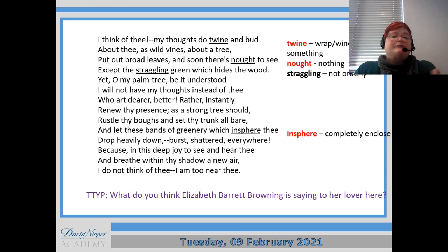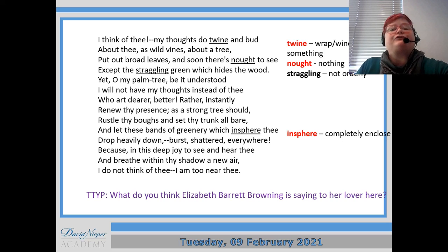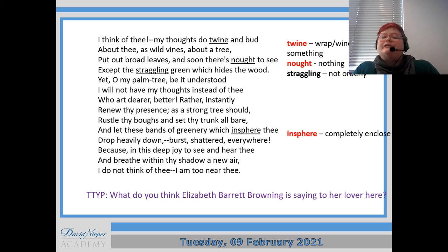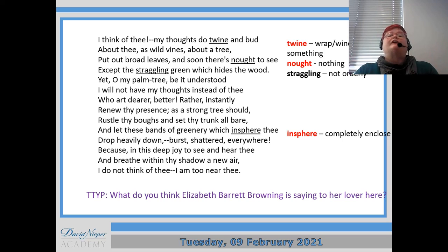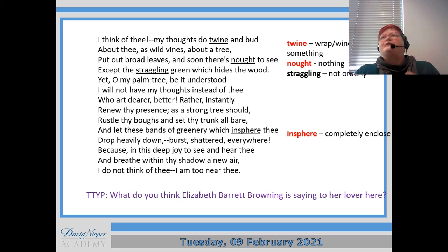'Let these bands of greenery which insphere thee drop heavily down' — she is the bands of greenery that insphere him. If she drops heavily down from him, that might mean she's reached the peak of her emotions. 'Burst, shattered everywhere' is possibly a reference to her sexual pleasure — perhaps her orgasm, either imagining what will happen when he returns or describing her current feelings as she thinks about him. At the end — 'I do not think of thee, I am too near thee' — when they're together it's not like he's a separate person; she's too wrapped up in him. It's like they're part of the same whole.